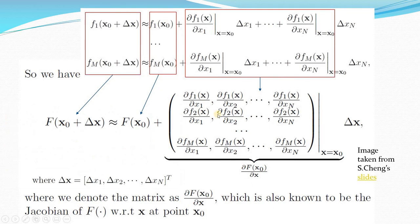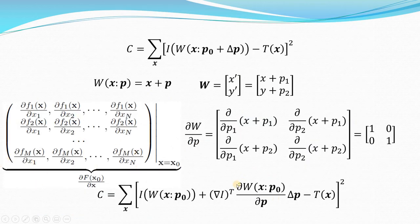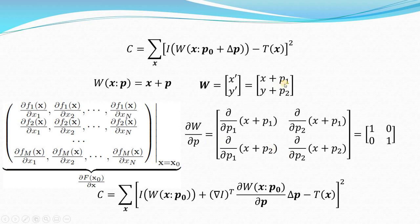Let's compute the Jacobian of W with respect to P for translation. The matrix has rows for each output coordinate and columns for each parameter. Differentiating f1 = x + p1 with respect to p1 gives 1, with respect to p2 gives 0. Differentiating f2 = y + p2 with respect to p1 gives 0, with respect to p2 gives 1. So the Jacobian for translation is simply the identity matrix.